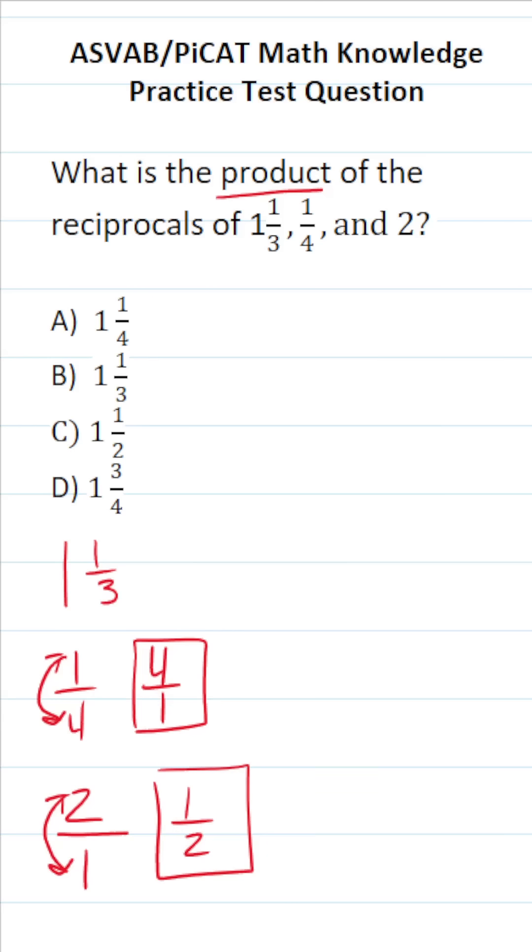To find the reciprocal of 1 and 1/3, we first have to express 1 and 1/3 as an improper fraction. So we're going to do 1 times 3, which is 3, plus 1, which is going to be 4. So again, that's going to be 4 over 3. That is the improper fraction equivalent of 1 and 1/3.